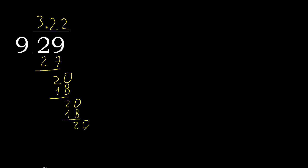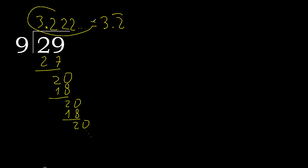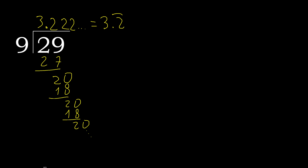It repeats, therefore repeat. The digit 2 repeats after the point — repeat, 2, repeat. Therefore, like this: 29 divided by 9 is 3.222... (repeating).